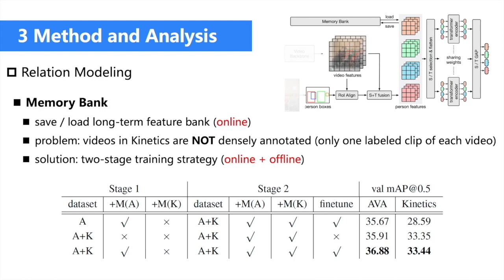We also adapt a memory bank for using long-term features in relation modeling. However, since Kinetics videos are not densely annotated — only one clip is labeled per video — maintaining the memory bank for Kinetics during training is challenging for computation cost and memory usage. To address this, we propose a two-stage solution combining online and offline strategies: in the first stage, we train only on AVA or ignore the Kinetics memory bank; then memory features are pulled offline for Kinetics and we fine-tune the model in the second stage with a frozen memory bank. It is better to train on both AVA and Kinetics across the two stages.